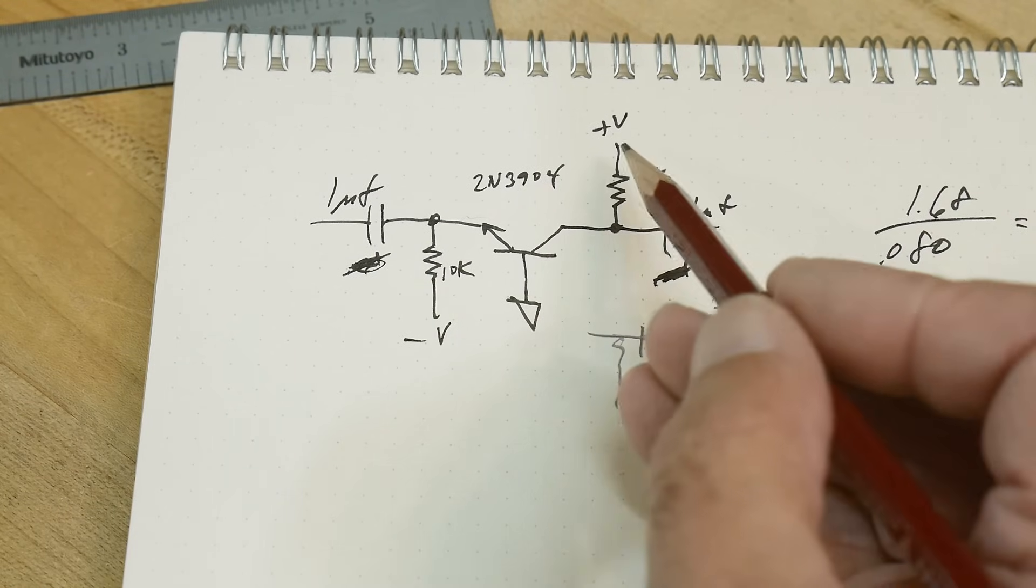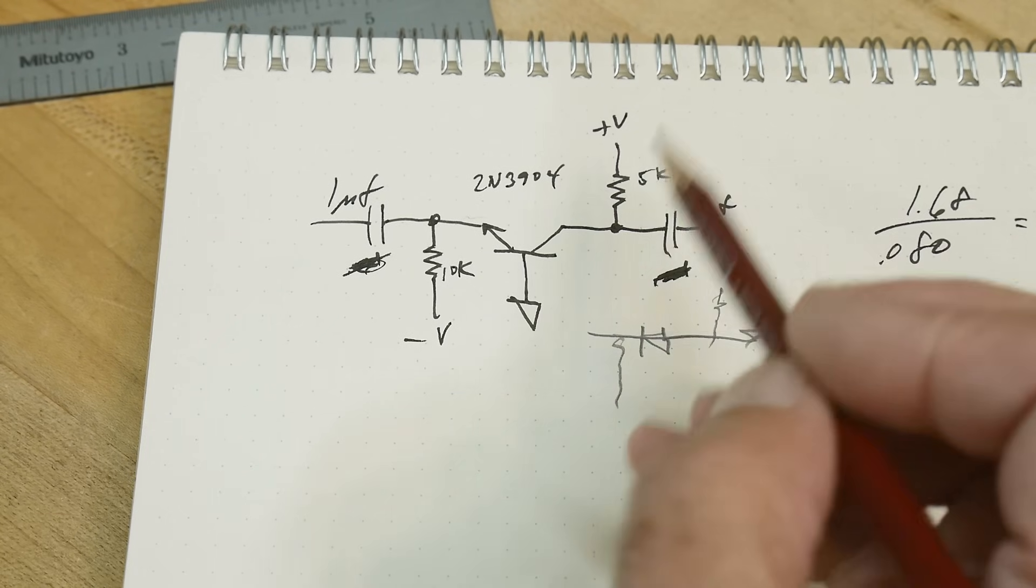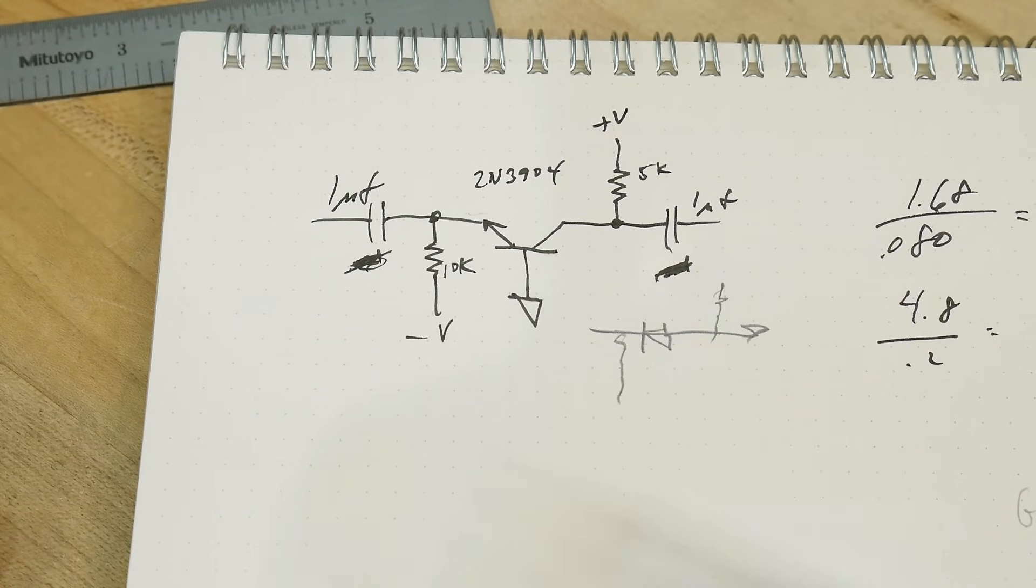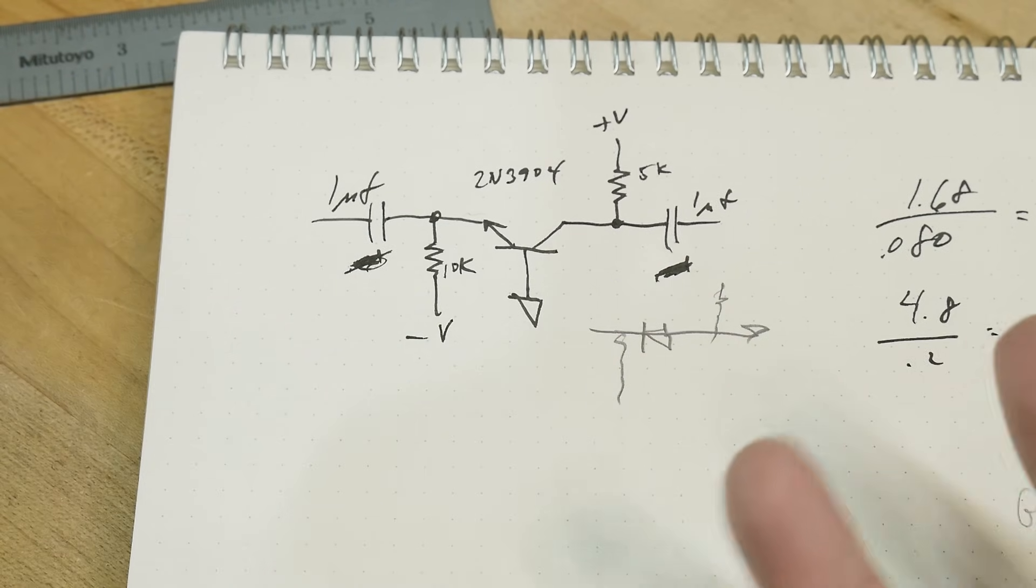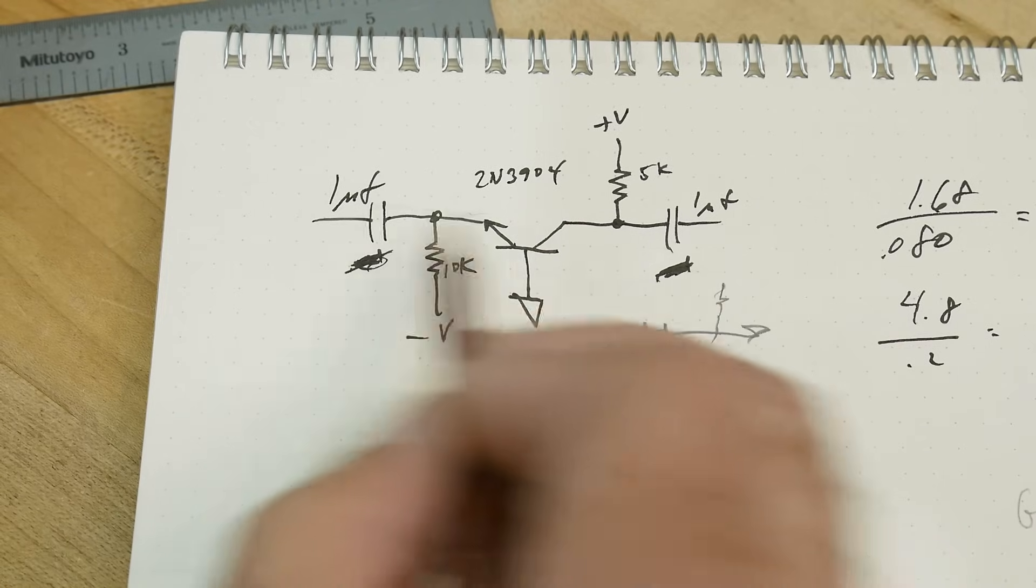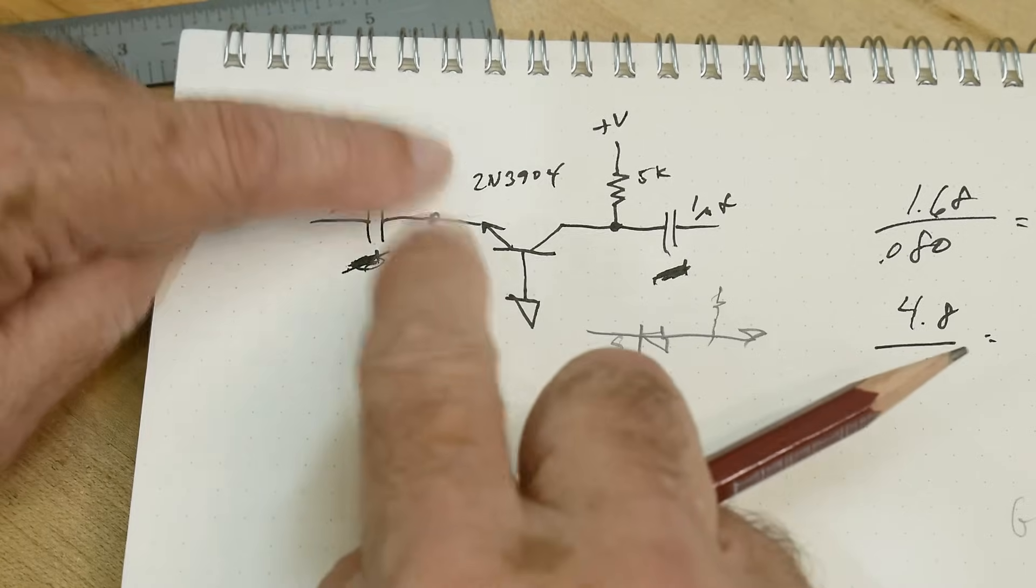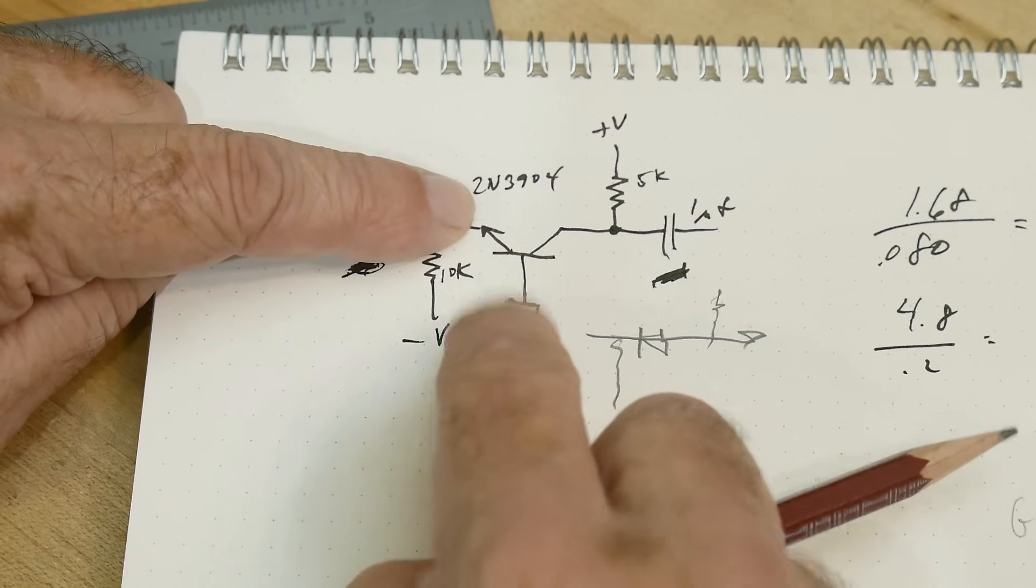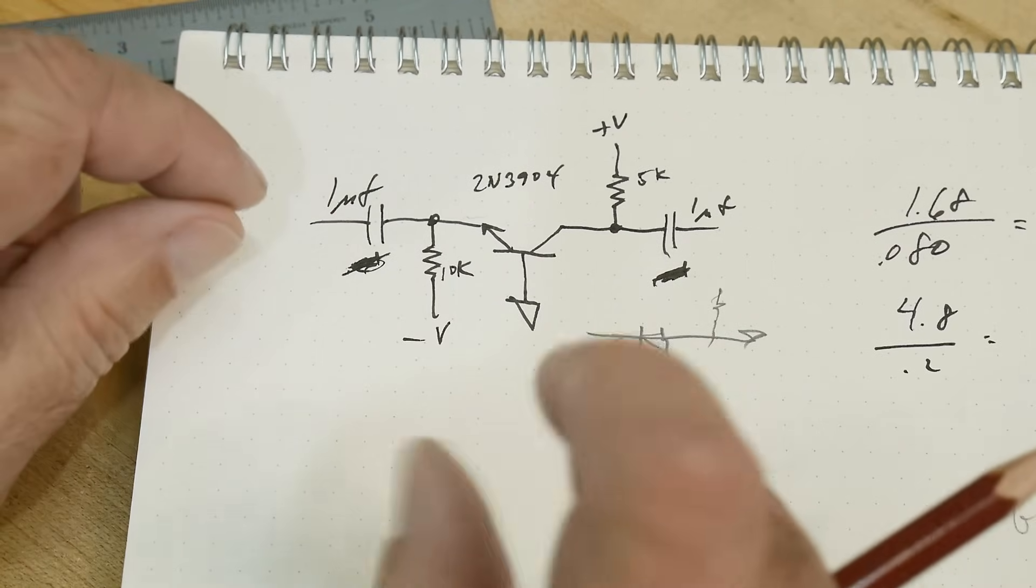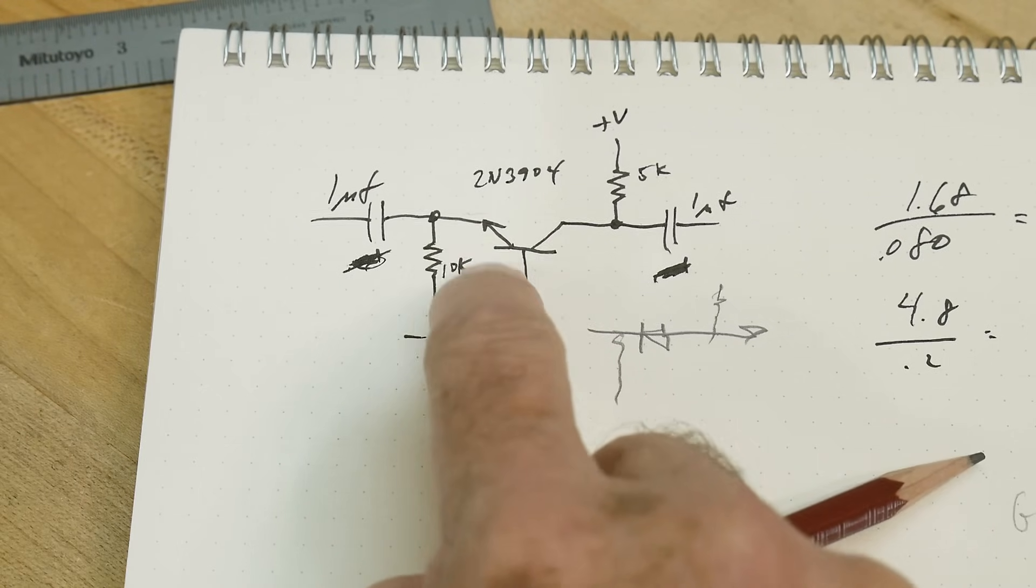Then over here we have a collector resistor. If you can get by this DC biasing thing, then imagine if you have wigglies here, those wigglies cause current wiggles. If you have current wiggle on this side, it means that you're wiggling the emitter base junction.